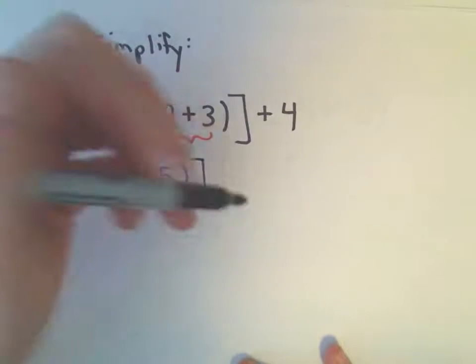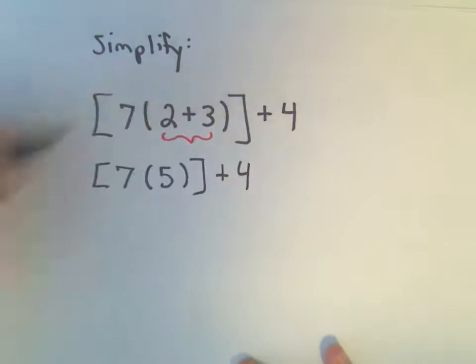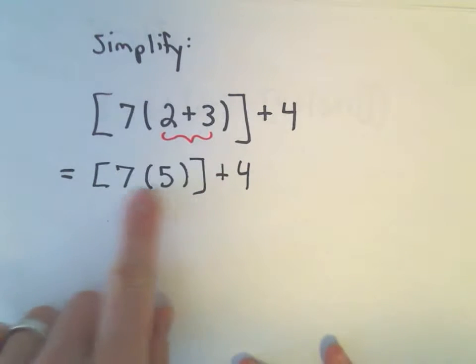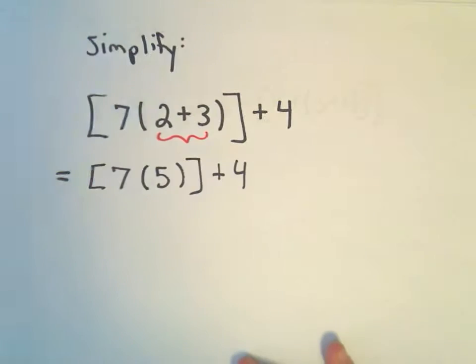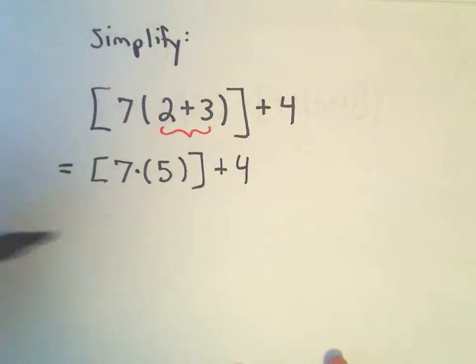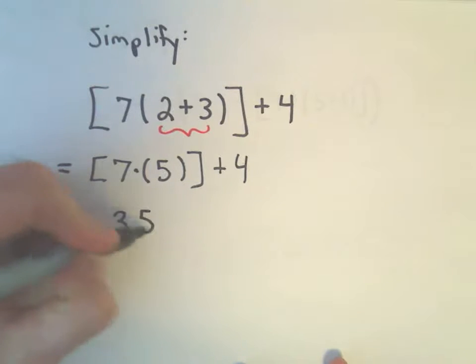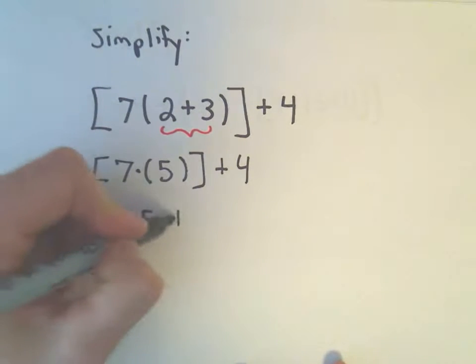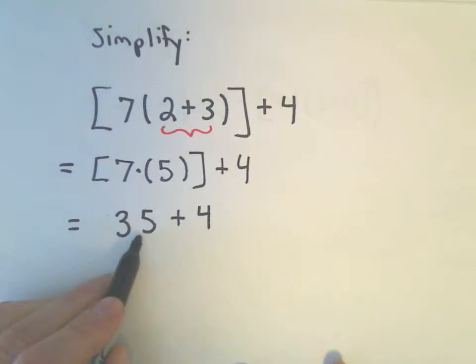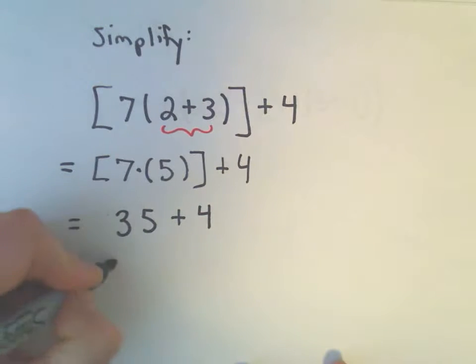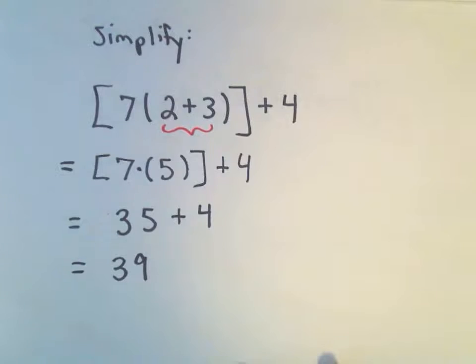And when we just have, let me write my plus 4 here, I'm getting ahead of myself. When we just have the two numbers together, what we really mean is we're multiplying. So 7 times 5 is going to give us 35. And you could still keep the brackets, but they're not necessary. So we have 35 plus 4, which is going to give us 39, and that's our solution.